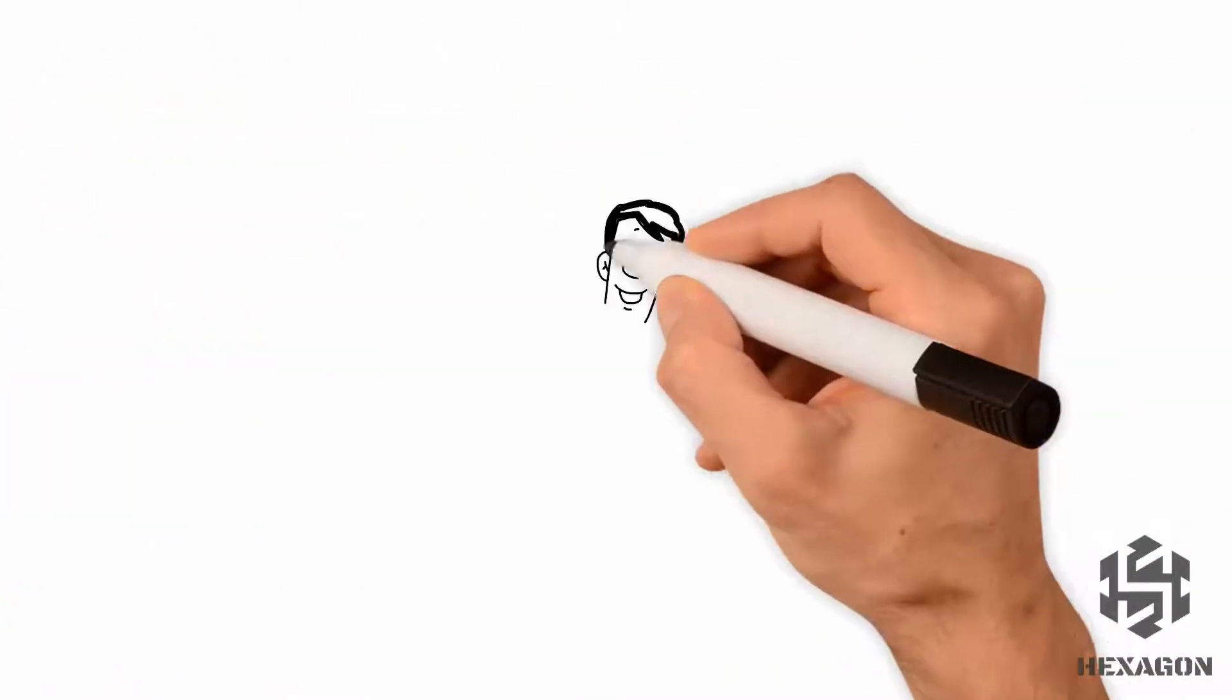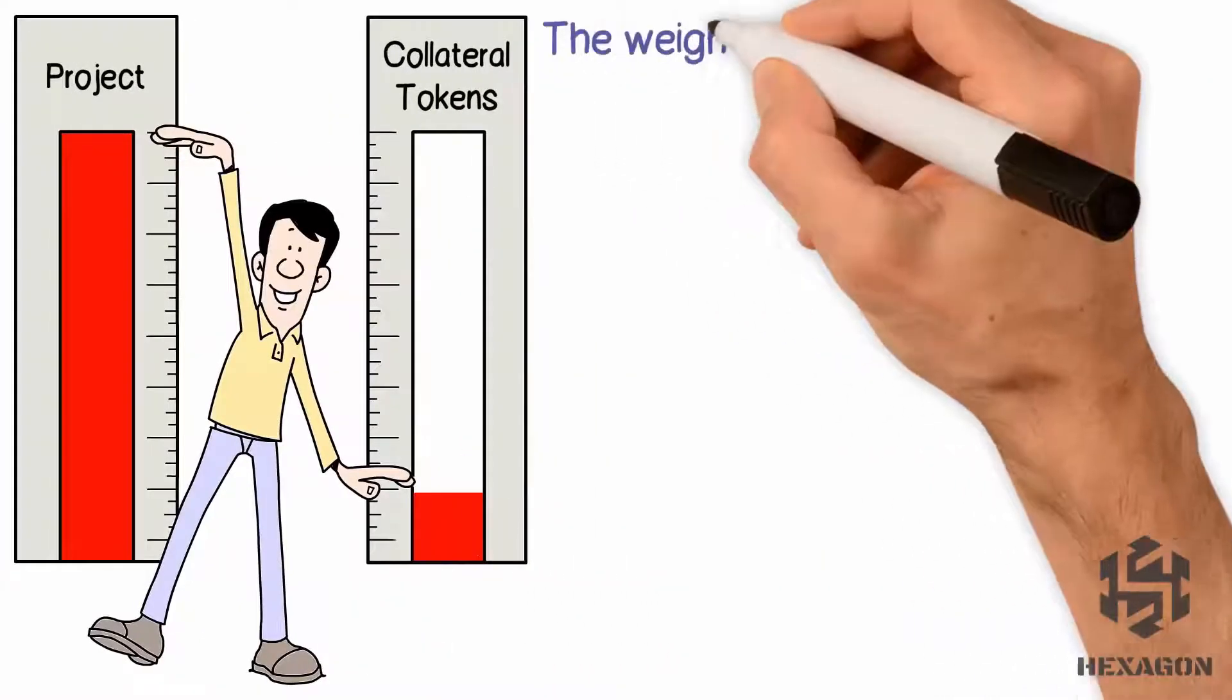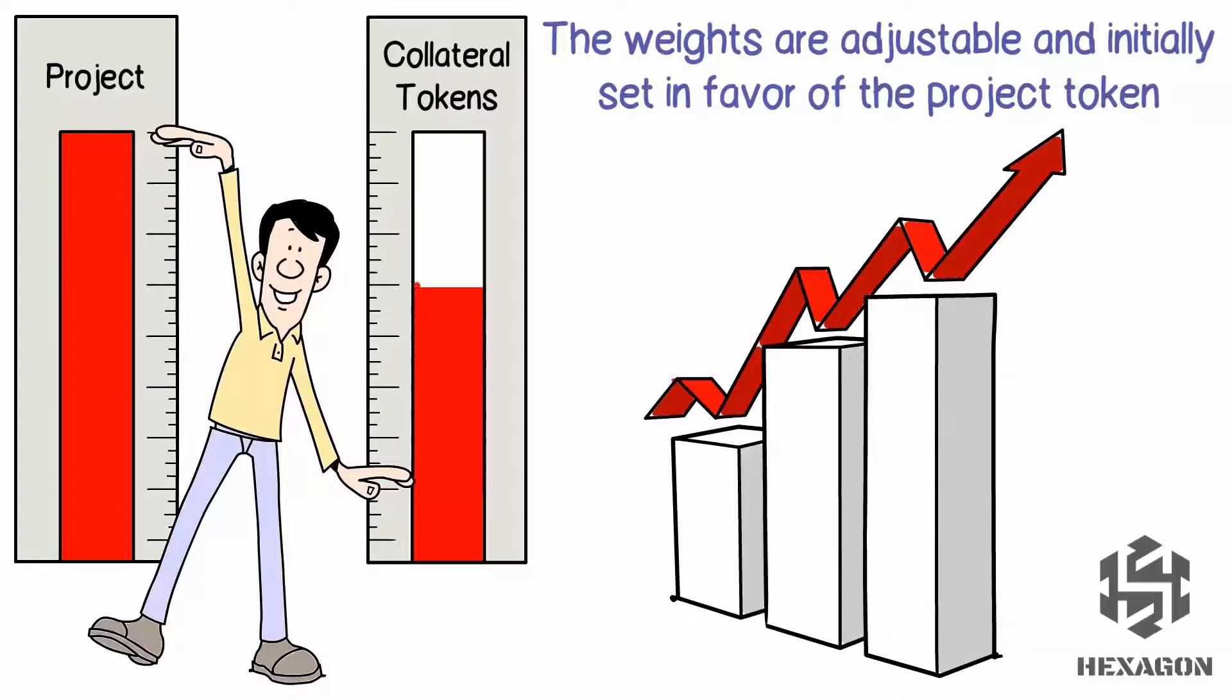For LBPs, a two-token pool is set up with the project and collateral tokens. The weights are adjusted and initially set in favor of the project token. Gradually, the collateral coin gains more weight.